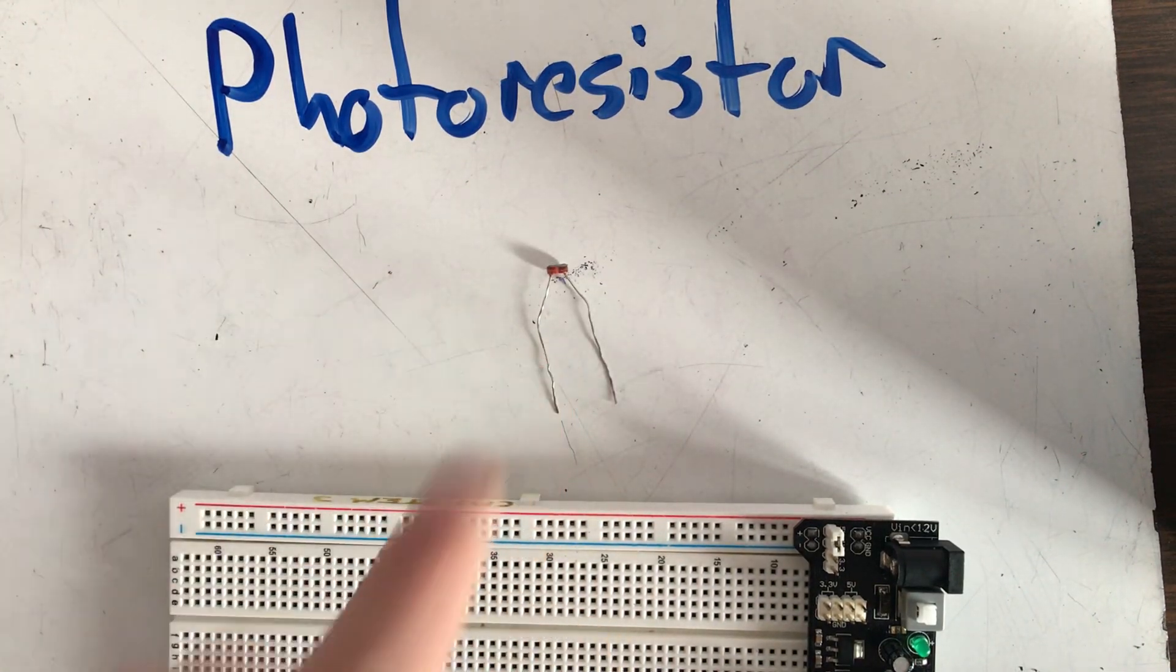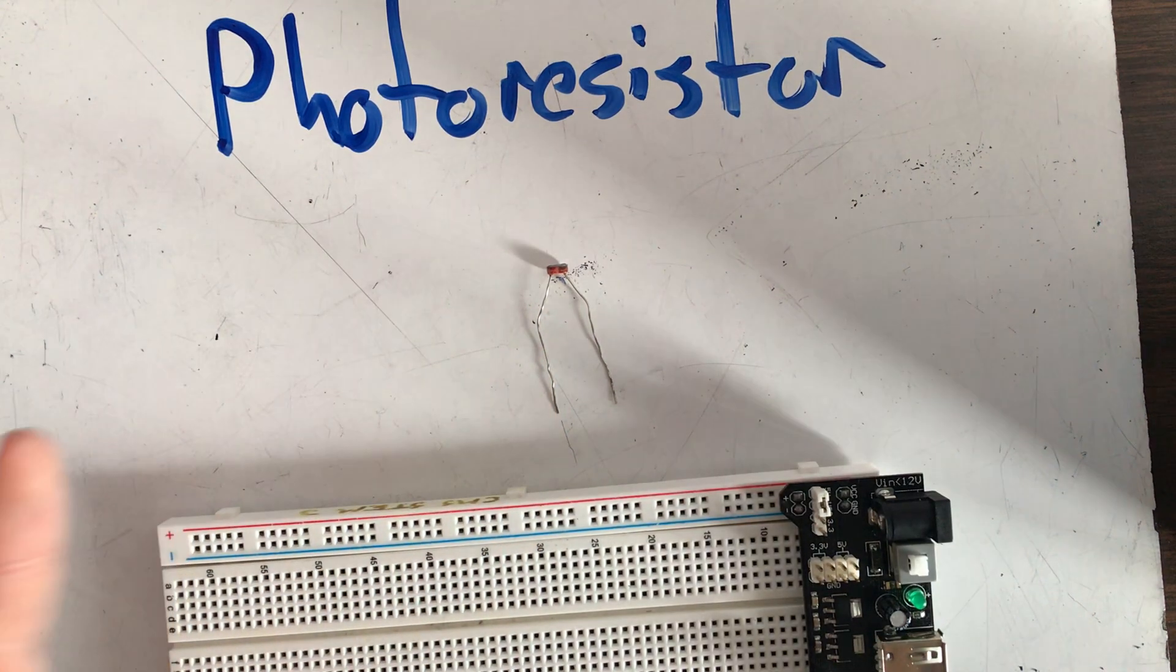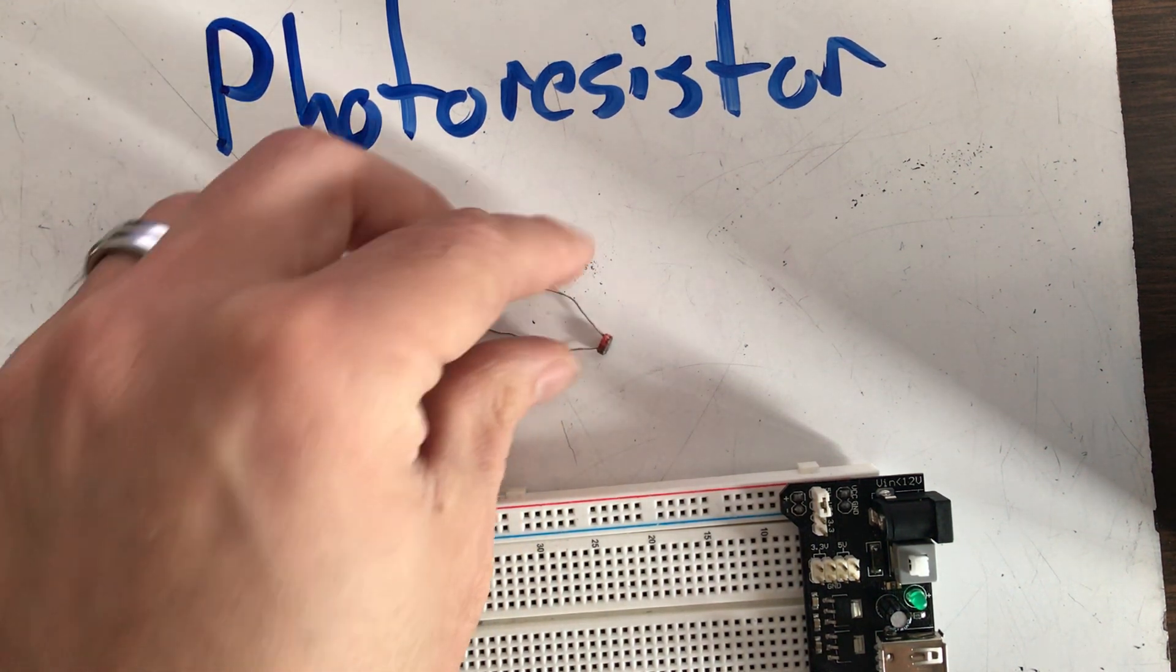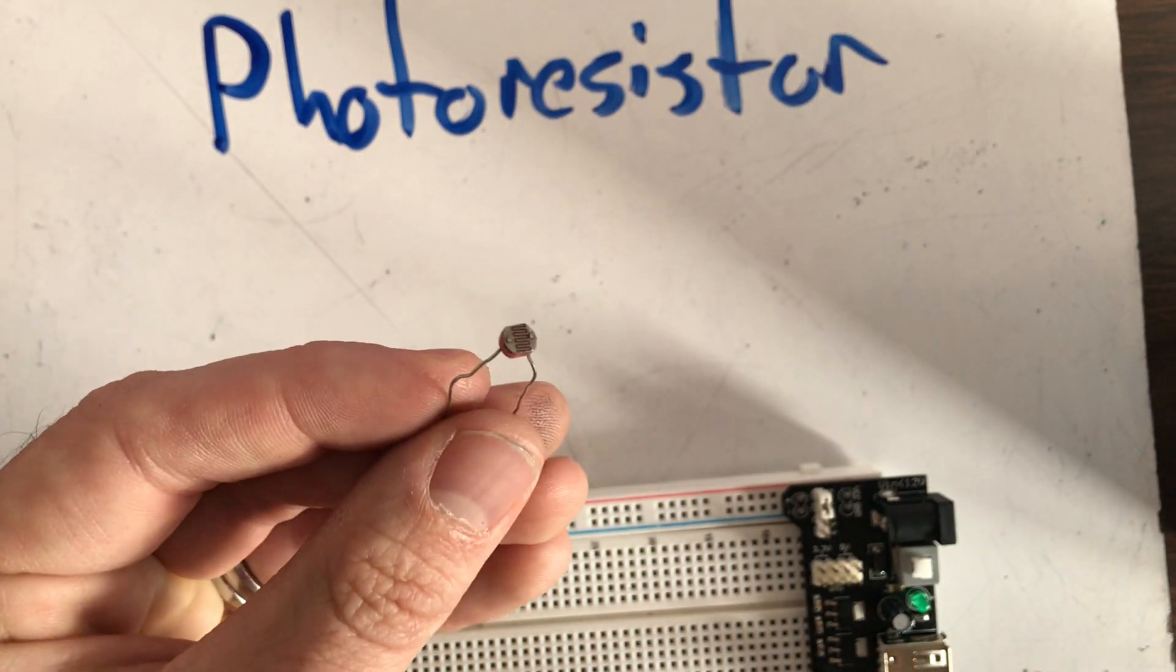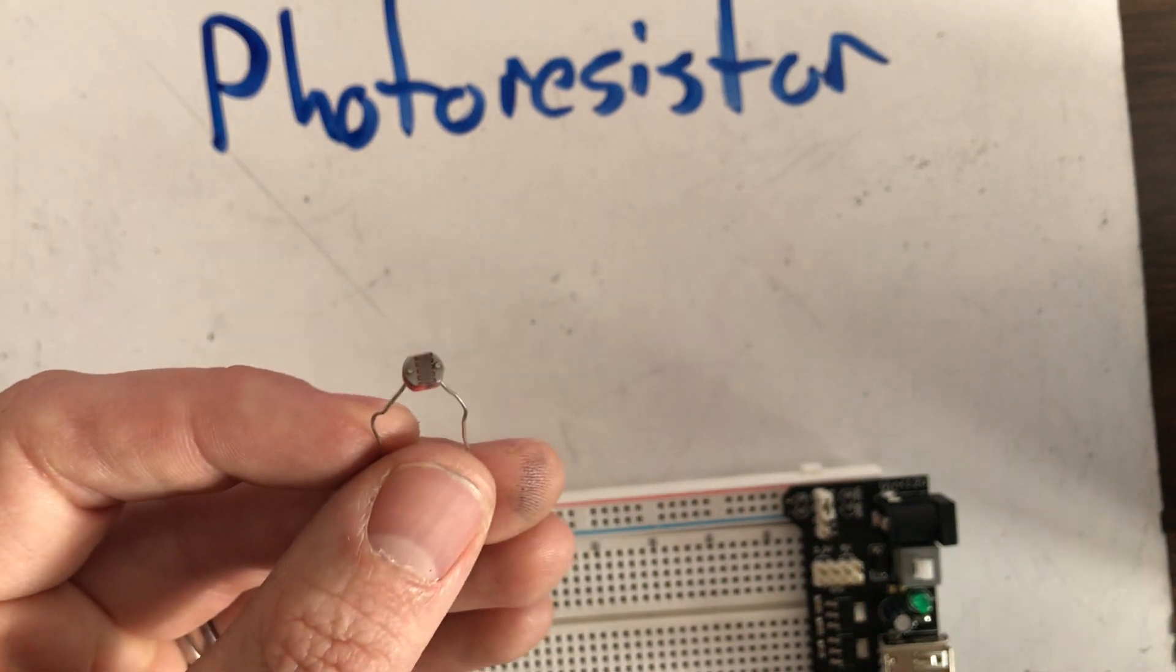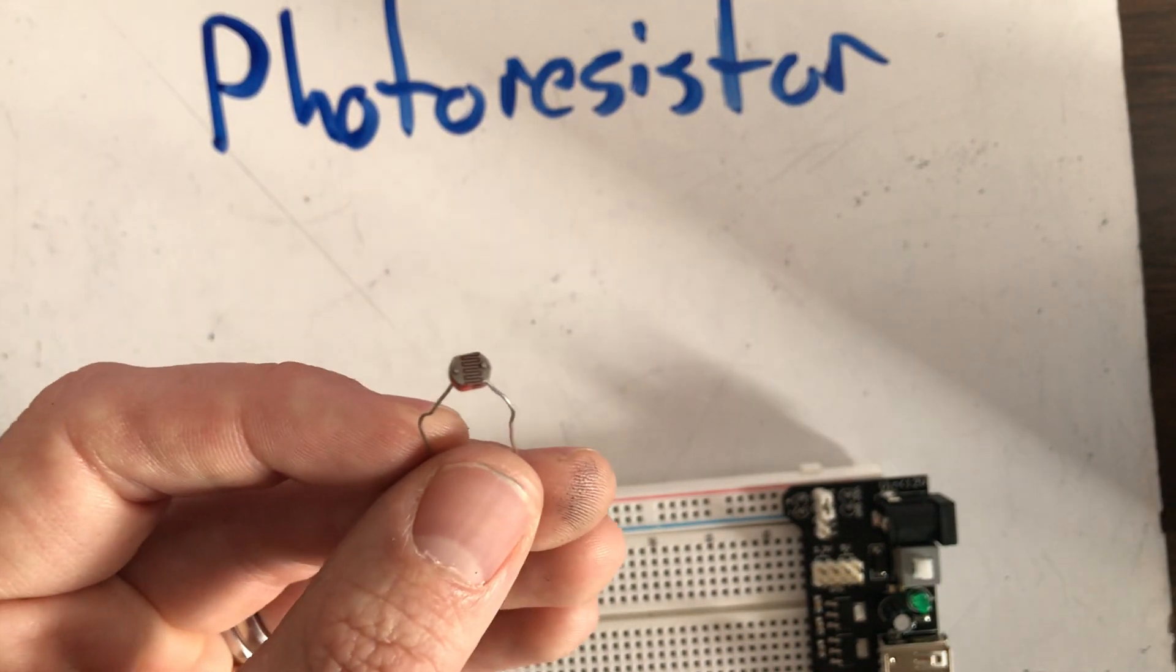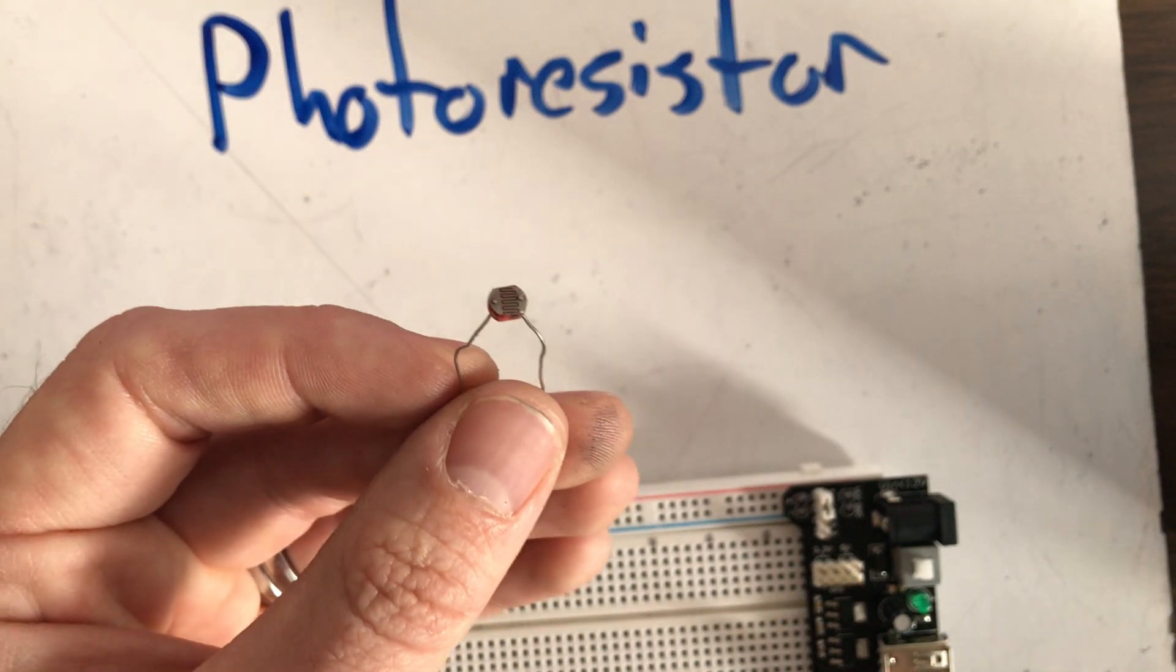So what's going to happen with a photoresistor is it's going to use the brightness of its environment to change how much resistance it gives. In a very dark environment, a photoresistor has lots of resistance. That must mean in a very bright environment that the photoresistor offers very little resistance.